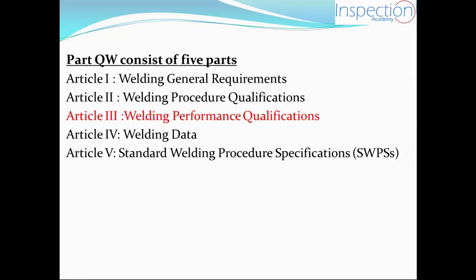Article 2 covers how to make a WPS and a PQR, giving you how to apply welding procedures according to ASME requirements. Article 3 is for welding performance qualifications, showing how to qualify the welder and welding operator. Article 4 covers welding data, and Article 5 covers standard welding procedure specifications, to help you perform welding with the right procedure to achieve the mechanical properties required by the ASME code.